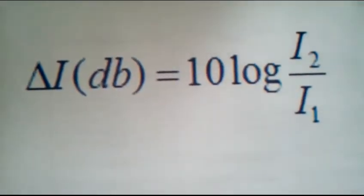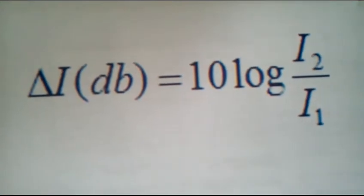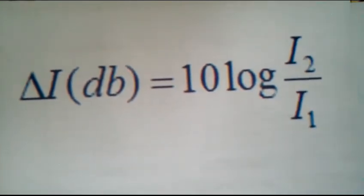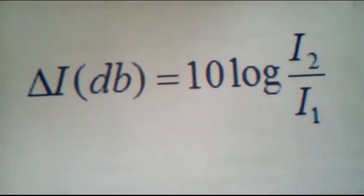Sound intensity is the sound power per unit area perpendicular to the wave. The units are usually in the form of watts per meter squared or watts per centimeter squared. The equation is as follows.